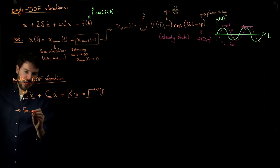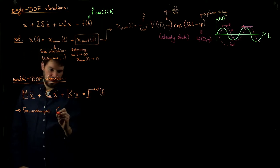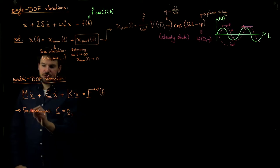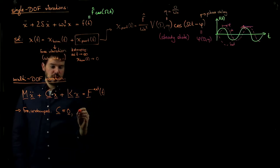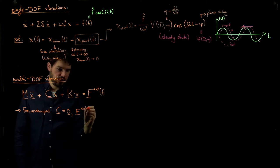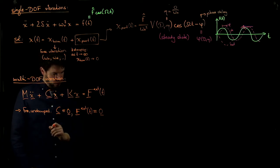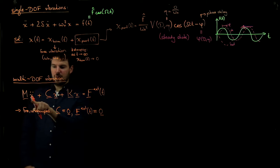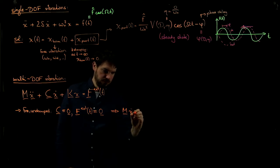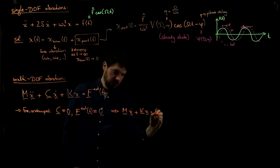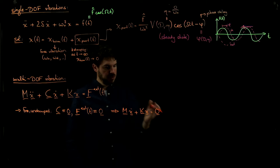The simplest case we looked at this week was a free, undamped vibration. Undamped means no damping, so the C matrix is identically zero. Free means no forcing, no excitation on the right-hand side, so f external of t is identically zero. This reduces to the much simpler equation: M x double dot plus K x equals zero — the governing equation for free multi-DOF vibration with no damping and no excitation.